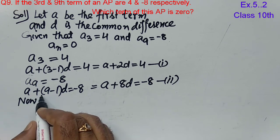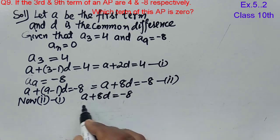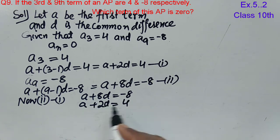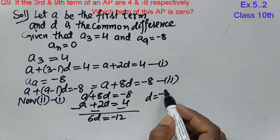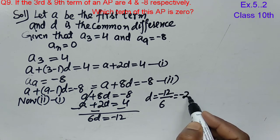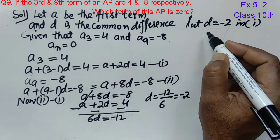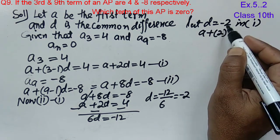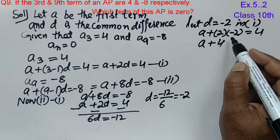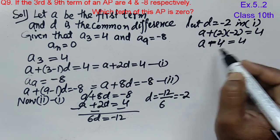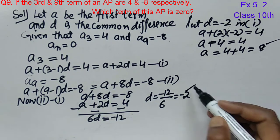Now second minus first. Second equation: A plus 8D equals minus 8. Subtract first equation: A plus 2D equals 4. After subtracting, 8D minus 2D gives 6D, and minus 8 minus 4 gives minus 12. So 6D equals minus 12, therefore D equals minus 12 divided by 6, which is minus 2. Now put D equal to minus 2 in the first equation: A plus 2 into minus 2 equals 4, so A minus 4 equals 4, giving A equals 8. So A equals 8 and D equals minus 2.